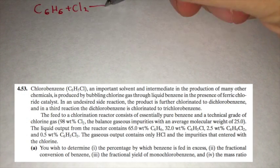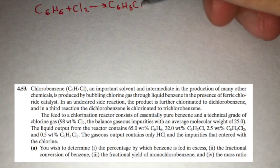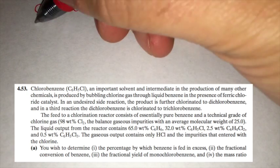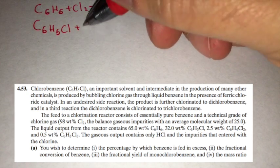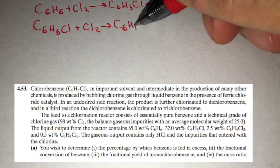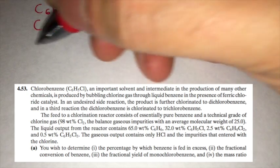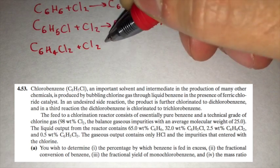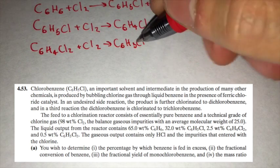Chlorobenzene, C6H5Cl, is produced by bubbling chlorine gas through liquid benzene in the presence of ferric chloride catalyst. In an undesired side reaction, the product is further chlorinated to dichlorobenzene. And in a third reaction, the dichlorobenzene is chlorinated to trichlorobenzene.